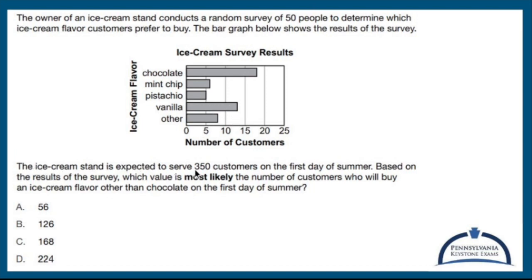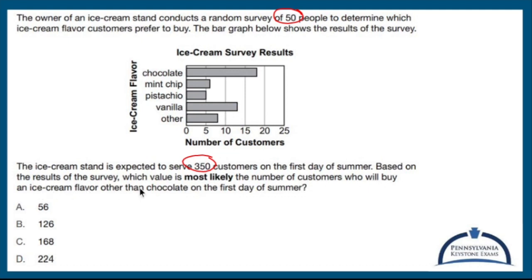The ice cream stand is expected to serve 350 customers, so I can link 50 to 350 on the first day of summer. Based on the results of the survey, which value is most likely the number of customers who will buy ice cream flavor other than chocolate on the first day of summer?